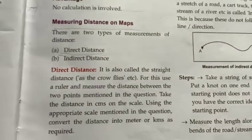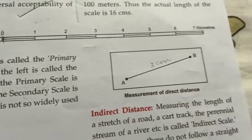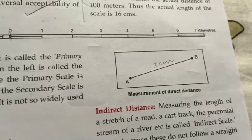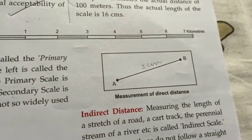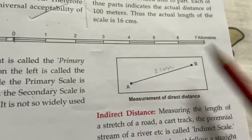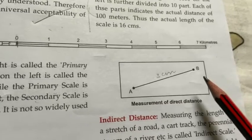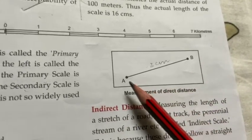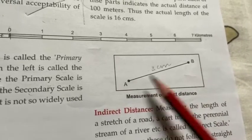Direct distance is used to measure straight lines. For example, if there is a straight line — like a road or a tunnel from point A to point B — and we want to measure the distance, we take a ruler on the map and measure in centimeters. For example, this is 3 centimeters on the map.